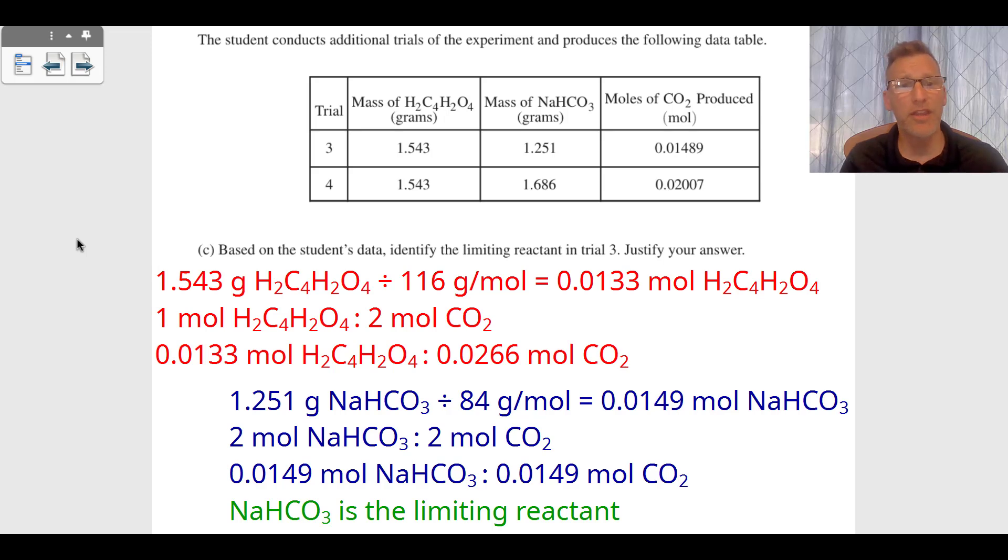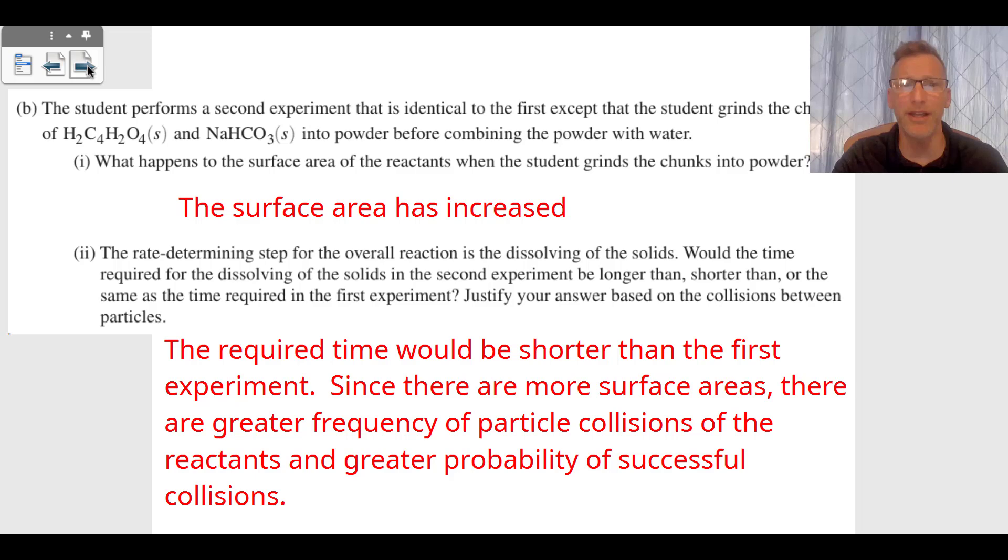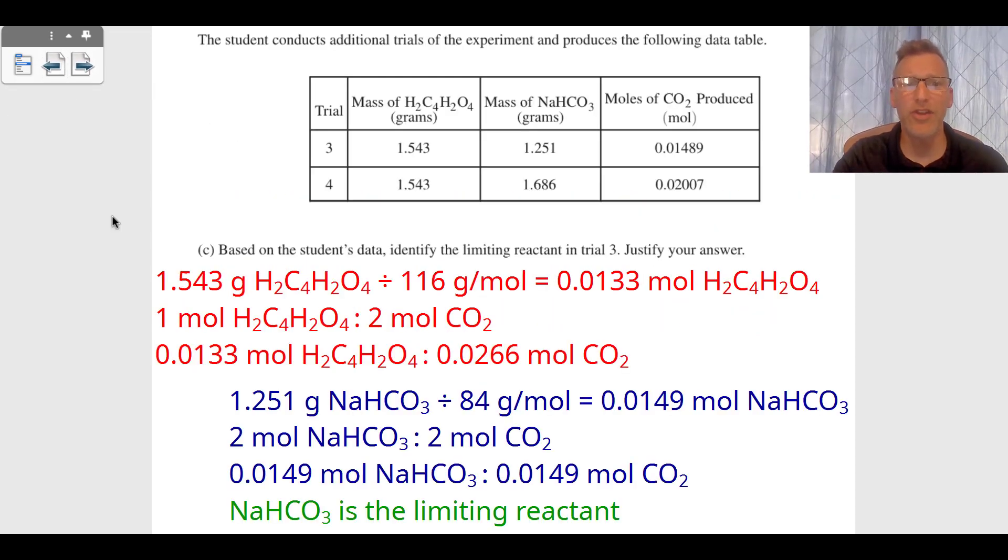We get the moles of maleic acid, then we look back at the chemical reaction. There's one mole of maleic acid for every two moles of CO₂, which means for every one mole of maleic acid we're producing two moles of CO₂. So 0.0133 moles of H₂C₄H₂O₄ produces 0.0266 moles of CO₂. That's going to be an excess because in trial three we only produce 0.01489 moles of CO₂.